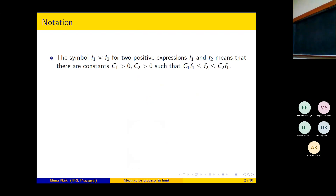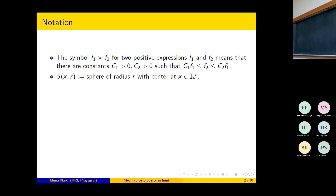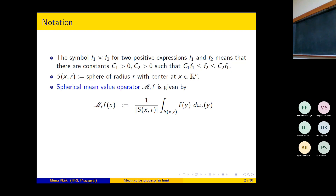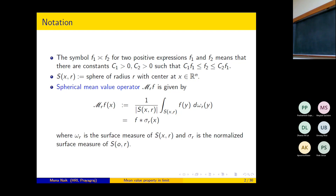Let us recall some notations. The symbol f₁ comparable to f₂ for two positive expressions f₁ and f₂ means that there are constants c₁ > 0 and c₂ > 0 so that c₁f₁ ≤ f₂ ≤ c₂f₁. The spherical mean operator M_r f is given by M_r f(x), which is the average over the sphere of radius r centered at x, where ω_r is the surface measure. One can write M_r f(x) as the convolution σ_r * f(x), where σ_r is the normalized surface measure.